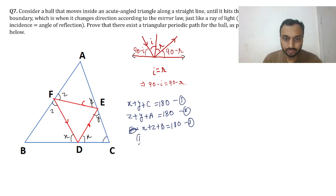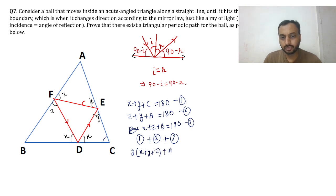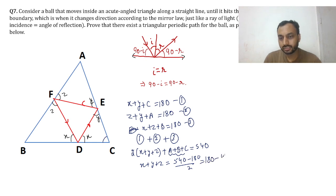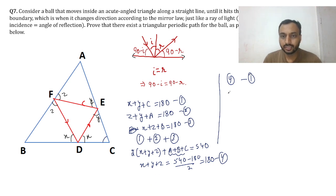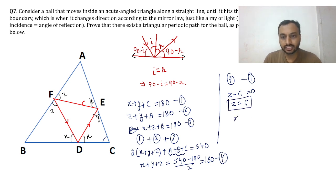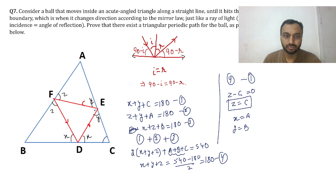Adding equations 1, 2, and 3 gives 2(X plus Y plus Z) plus A plus B plus C equals 540. Since A plus B plus C equals 180, we get X plus Y plus Z equals 180 — call this equation 4. Subtracting equation 1 from equation 4 gives Z equals C. Similarly, X equals A and Y equals B.